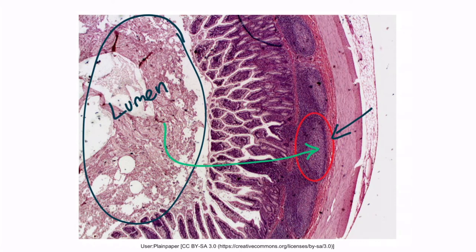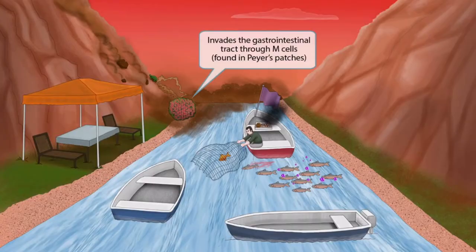Salmonella exploits M cell function by going from the lumen into the intestinal tissue by gaining access through M cells. So raspberry patches for Peyer's patches.